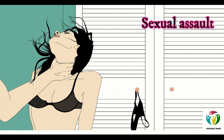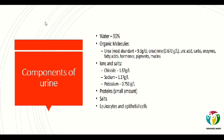Such evidence is also prevalent in sexual assaults and harassment cases. Now, the different components of urine: the major quantity is water itself — 95% of urine is composed of water. The other components cover around 5%, including organic molecules, ions, salts, proteins, leukocytes, and epithelial cells. Organic compounds present in urine include urea, creatinine, uric acid, carbohydrates, enzymes, fatty acids, hormones, pigments, and mucins. Among all organic molecules, the most abundant in urine are urea and creatinine.